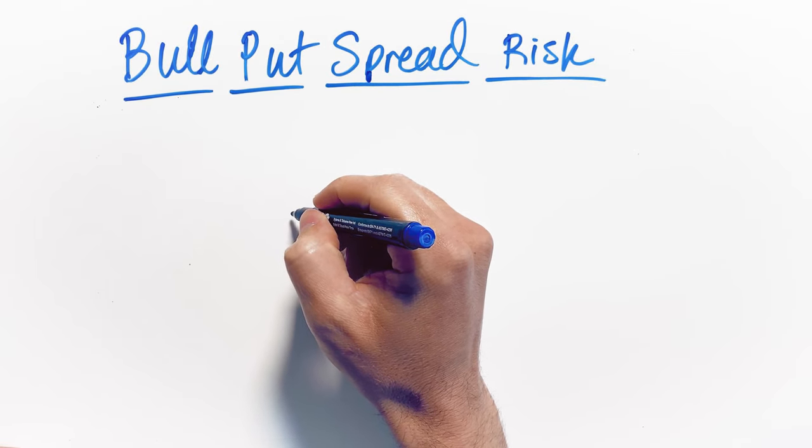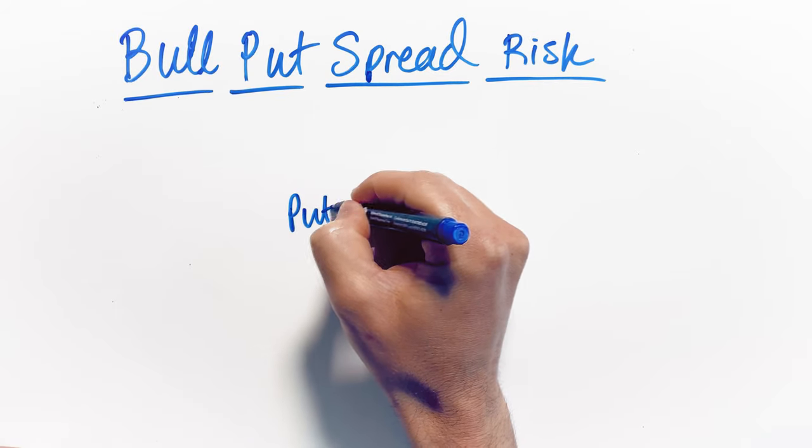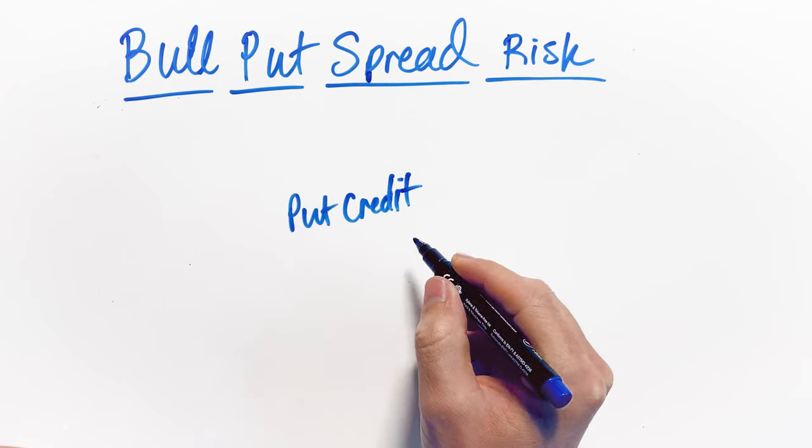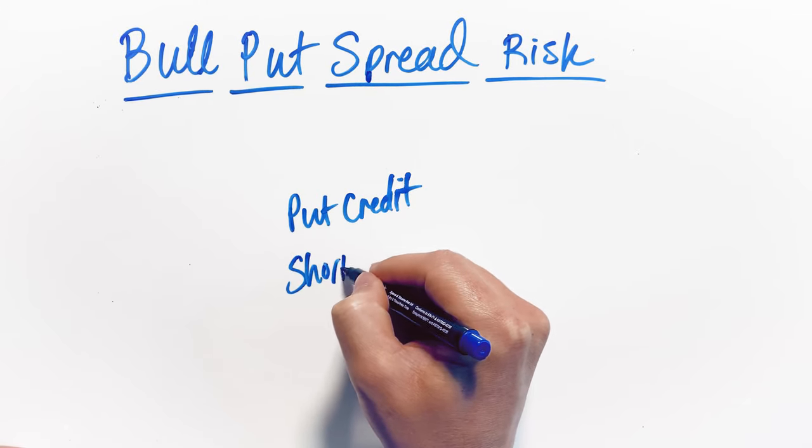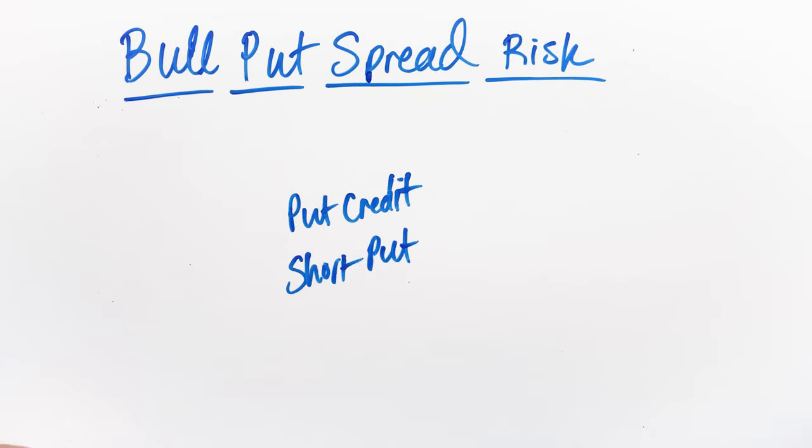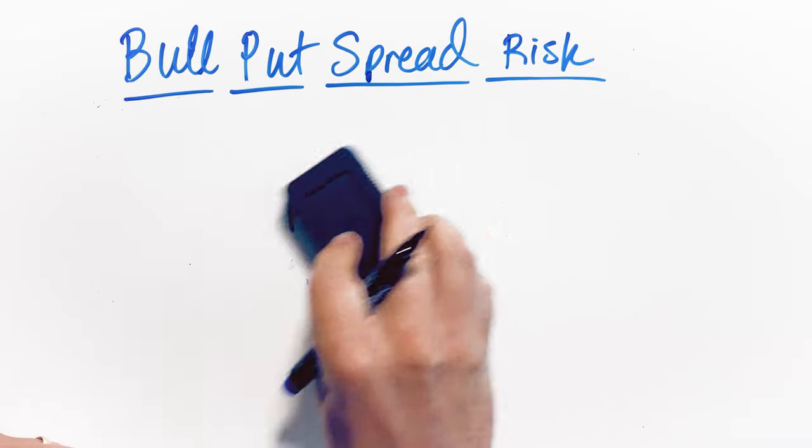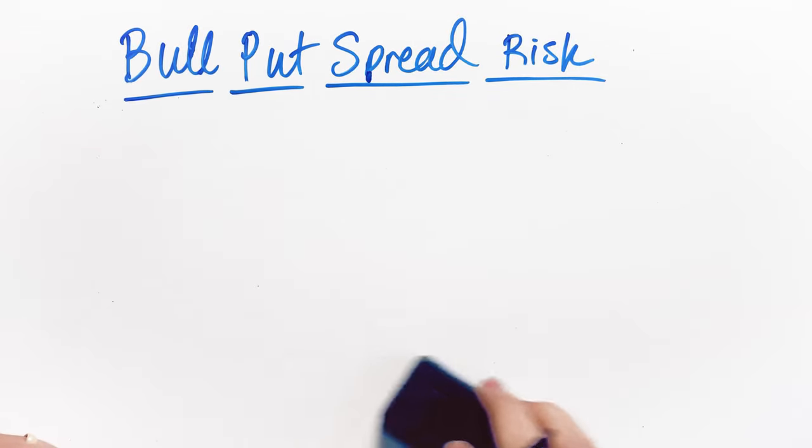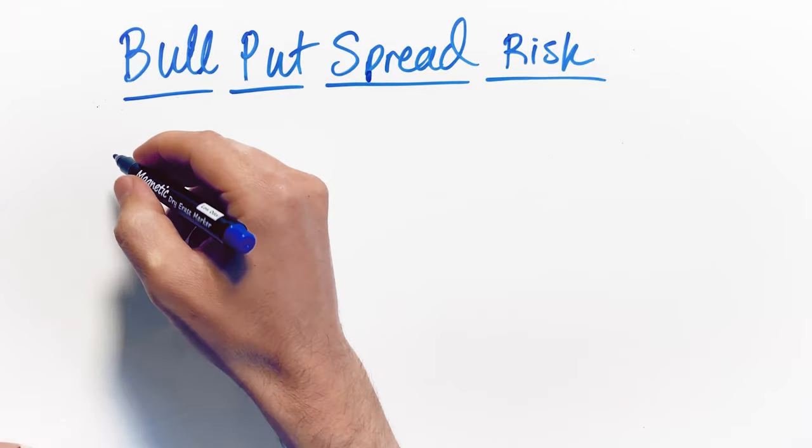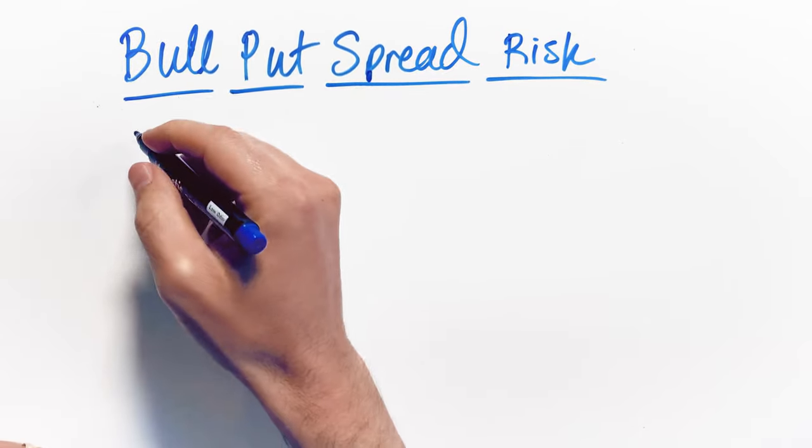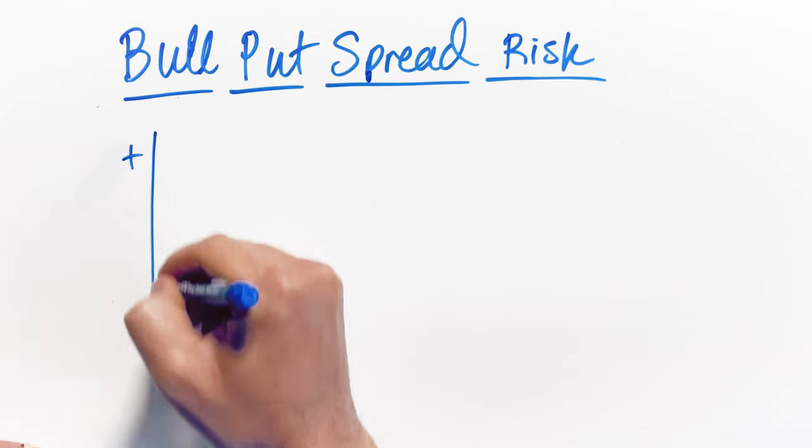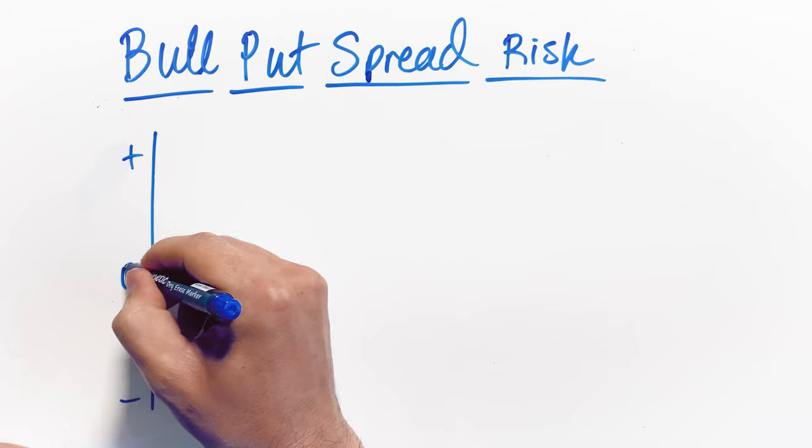Again, this is also referred to as a put credit spread since you're selling options net and taking in a credit, or referred to as a short put spread. There's a lot of different names that people can give this, but ultimately, it's all the same stuff. It's really important that we go through this and understand exactly how to calculate these breakeven points because they're important in understanding the risk that's associated with the positions that you're trading.